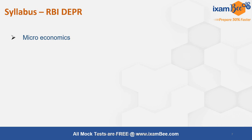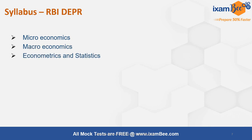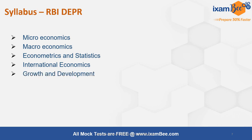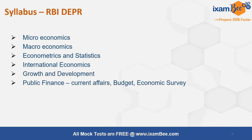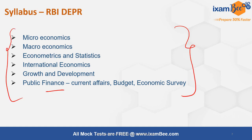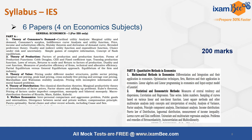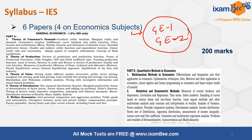Based on analysis of previous year questions, the broad syllabus for RBI DEPR covers macroeconomics, econometrics and statistics, international economics, growth and development, and budget and economic survey, including current affairs from public finance. When you compare this with the detailed IES syllabus prescribed by UPSC, the GE Paper 1 and GE Paper 2 extensively cover most of the RBI DEPR syllabus.